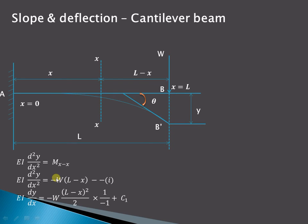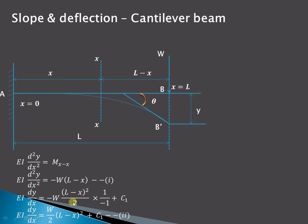Integrating this equation with respect to x: EI dy/dx equals minus W times the integral of (L minus x), which gives (L minus x)² divided by 2, and again divided by the coefficient of x which is minus 1, plus a constant of integration C1. The two minus signs cancel, so we get W/2 times (L minus x)² plus C1 as our second equation.